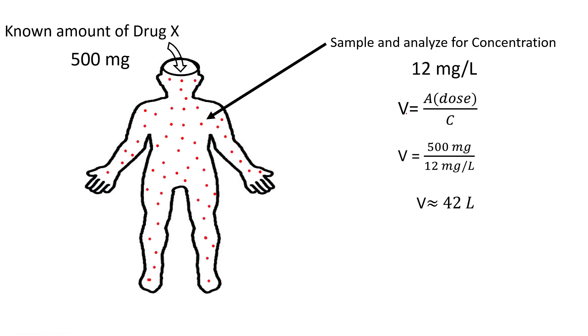We could use the formula volume equals an amount over a concentration, in this case the amount is the dose, and when we figure that out, we have 500 milligrams over 12 milligrams per liter, and we get a volume of approximately 42 liters, which happens to be the average volume of total body water.